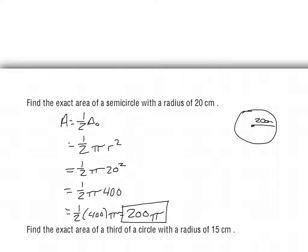Quick check on this one: we have a semicircle, so half of the area of a regular circle — one-half of π times r squared. Our radius is 20, so 20 squared is 400. One-half of 400 times π gives 200π. Make sure you've done the next one before you continue watching.